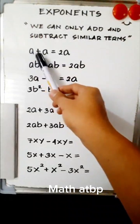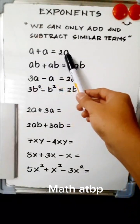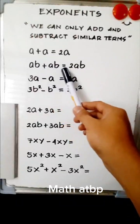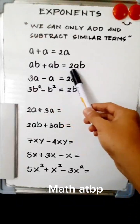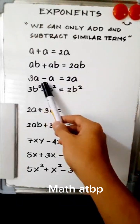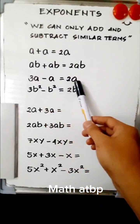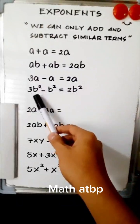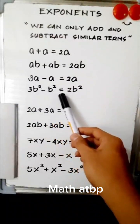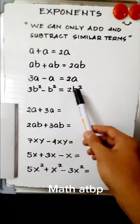We have here: a plus a is equal to 2a. ab plus ab is simply equal to 2ab. 3a minus a is 2a. And 3b squared minus b squared is equal to 2b squared.